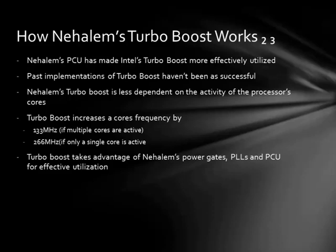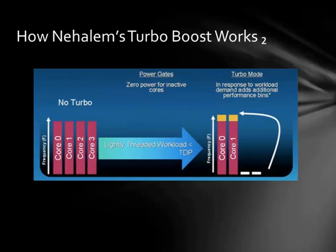Nehalem's Turbo Boost technology is very dependent on several pieces of Nehalem architecture. Sensors within each of the cores alert the power control unit of the core temperature, current, and power. The PCU is then able to increase or decrease the voltage of PLLs in each core based on the data provided by these sensors. The PCU can also turn off power gates to inactive cores to prevent leakage power and prevent the chip's temperature from reaching the TDP. In this slide, you can see Turbo Boost in action — it has effectively increased the clock speed of two cores by disabling two inactive cores, giving each active core a clock speed boost of 133 MHz.